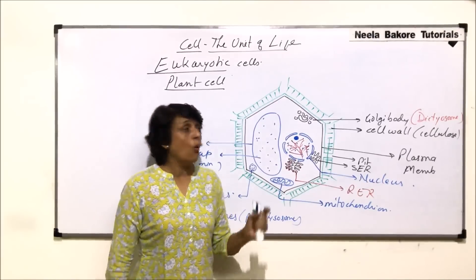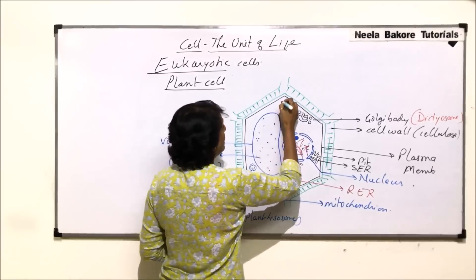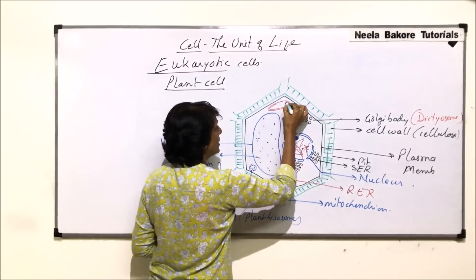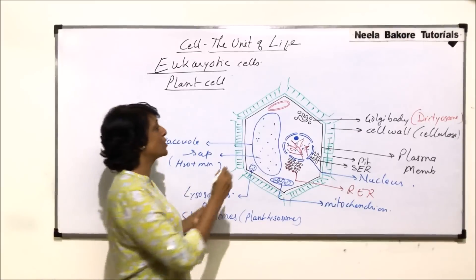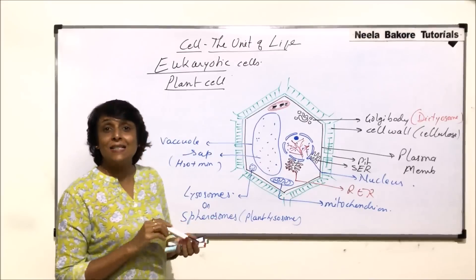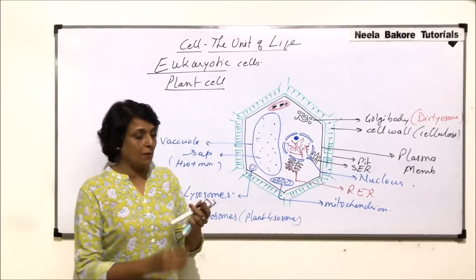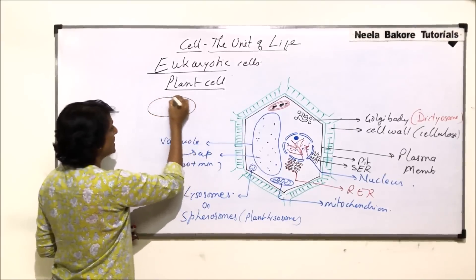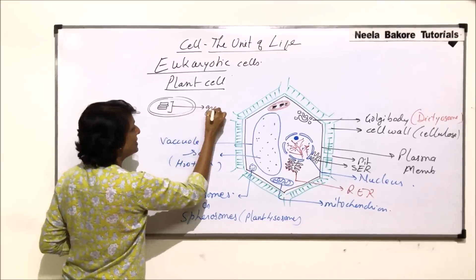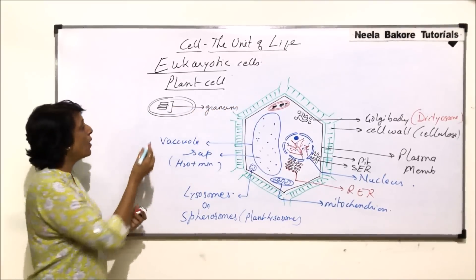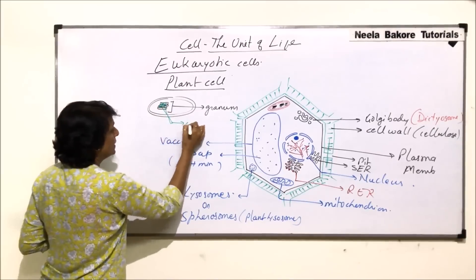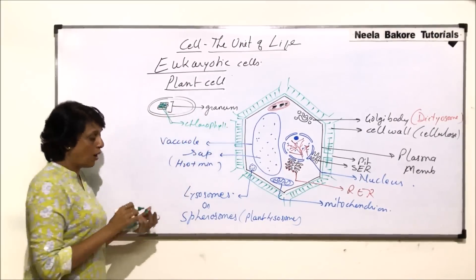One structure found only in plant cells and not in animal cells is the plastid. Here we are drawing a chloroplast. In the chloroplast, a double membrane is present — both outer and inner membranes are smooth. Inside are stacks of thylakoids called grana. In the thylakoid membrane are present the chlorophyll pigments — chlorophyll is the green pigment found in chloroplasts.